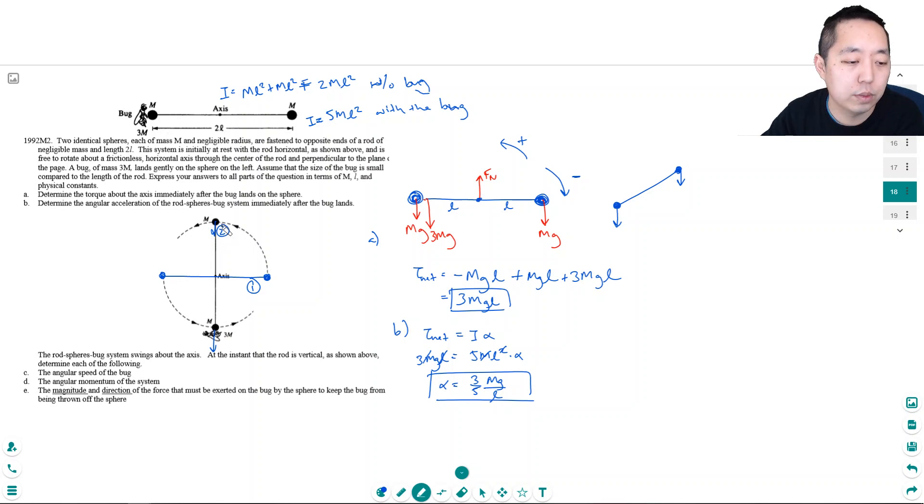I want to look at the energy of the system when it's like this—we'll call this state one—and then when it's state two. In state one, the energy of the system has no rotation because the bug just landed, so it has no kinetic energy in terms of that, but it does have potential energy.